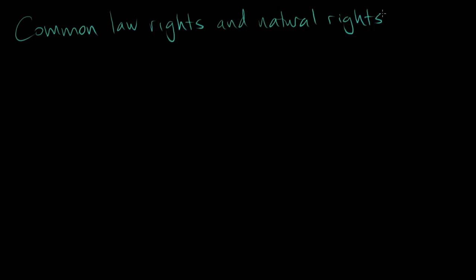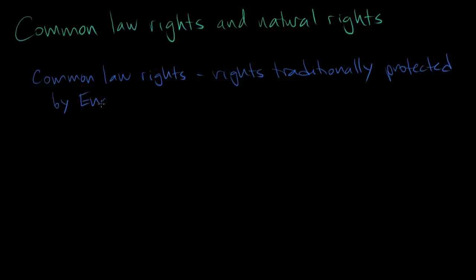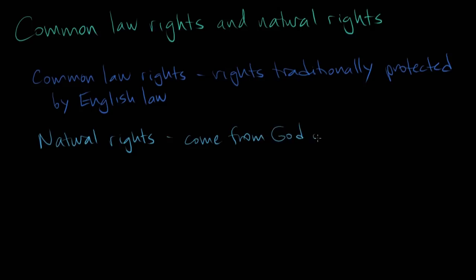Although we should distinguish — not all of the common law rights of Englishmen were natural rights. The common law rights are rights that were traditionally protected by English law, recognized by English judges over centuries. Natural rights come from God or nature, not from government. There's overlap between those groups, but some common law rights of English people were recognized by tradition — like the right to jury trial, for example. That's not a natural right because there are no juries in the state of nature. And it's so interesting that over and over again, the framers said everyone knows what these natural rights are — they're the ones recognized in Corfield and Coriel.